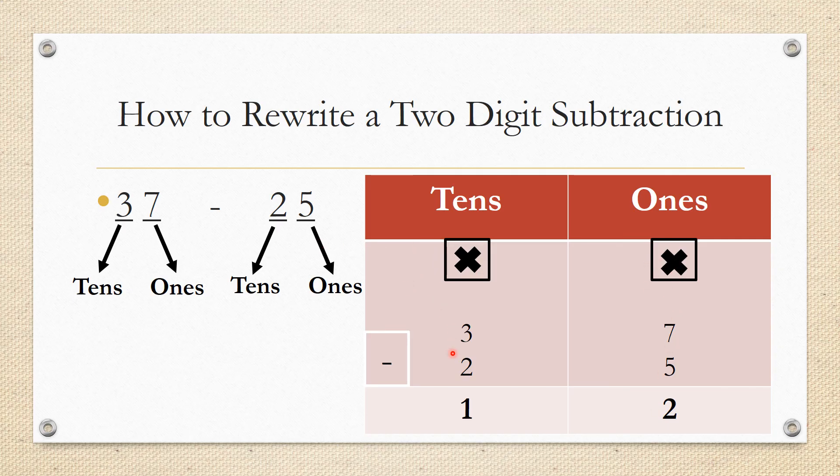And I will move to the tens. 3 minus 2 is equal to 1, so 37 minus 25 is equal to 12.